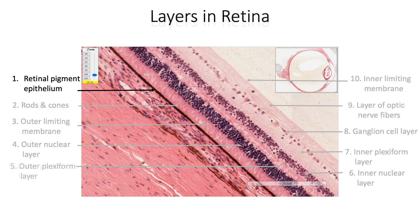Retinal pigment epithelium is made of cuboidal epithelium resting on Bruch's membrane. These cells contain a basal nucleus and numerous melanin granules, and they also send apical microvilli between rods and cones. They form the blood-retina barrier, phagocytose membranous discs from the rods and cones, absorb scattered light, and help in synthesizing visual pigment.